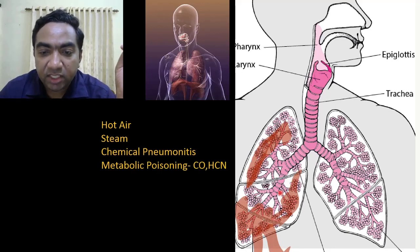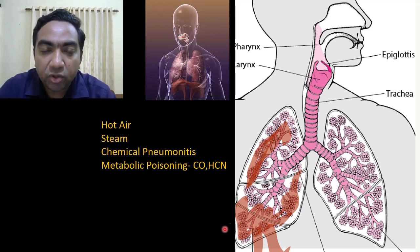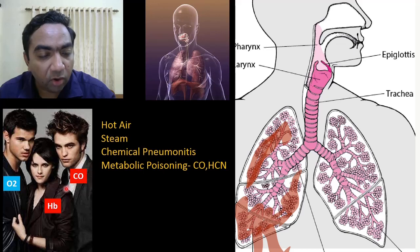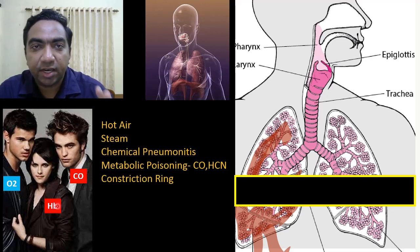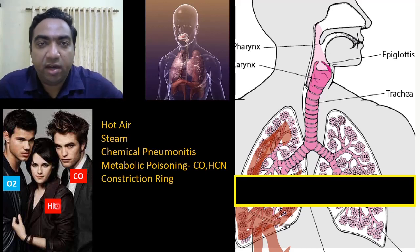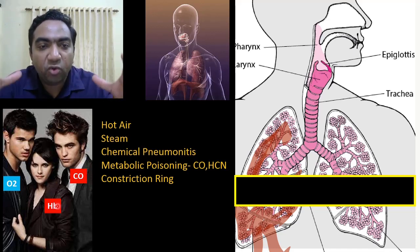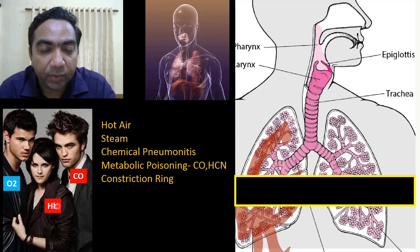There can also be metabolic poisoning. Gases produced in burns, like carbon monoxide or hydrocyanic acid, can enter the bloodstream and result in acidosis and metabolic poisoning. In carbon monoxide poisoning, there is increased affinity of carbon monoxide to hemoglobin, so oxygen cannot bind to hemoglobin, resulting in tissue hypoxia. Additionally, due to skin burns, a strong eschar forms on the skin, mechanically obstructing respiratory movements, creating a constriction ring and causing restrictive respiration and inadequate oxygenation.